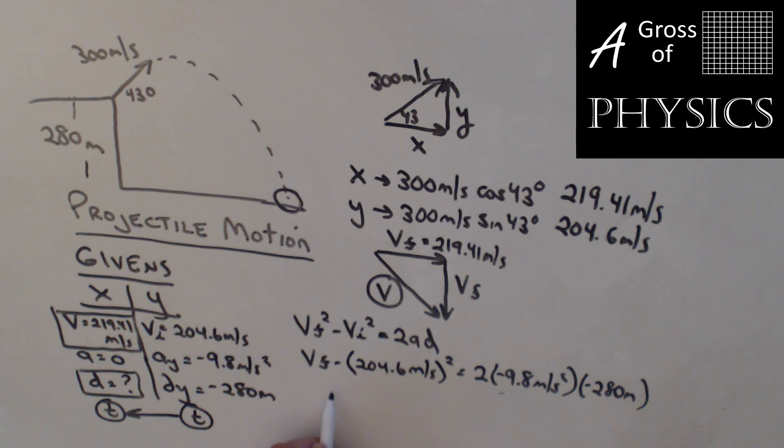The answer for vf squared is 47,349. I need to take the square root of the answer, and I get 217.6 meters per second. So vf here is 217.6 meters per second.